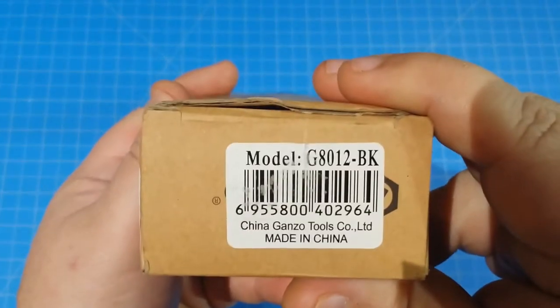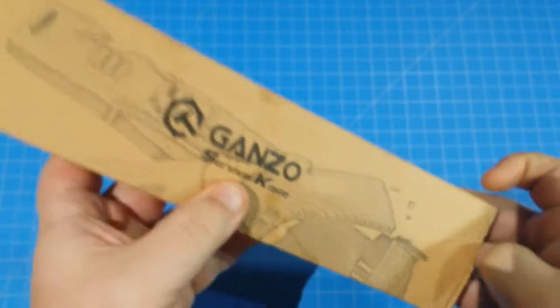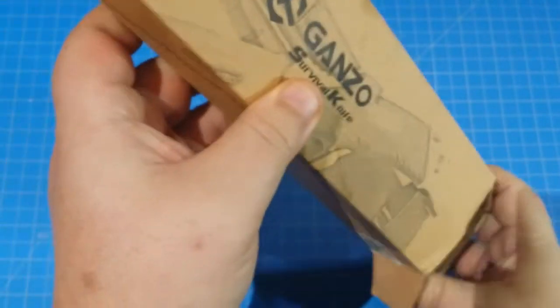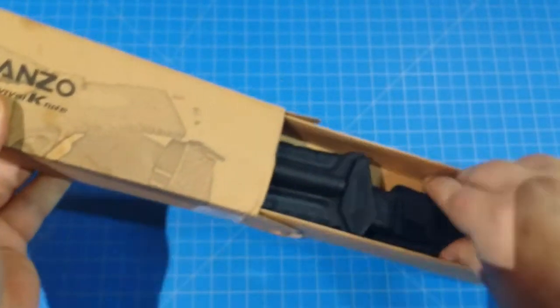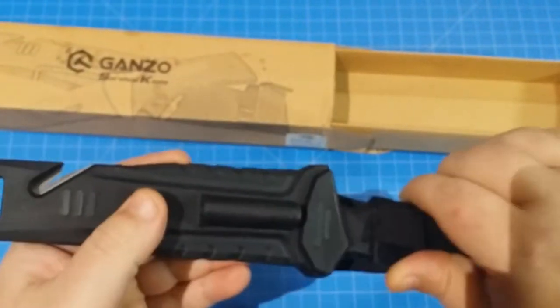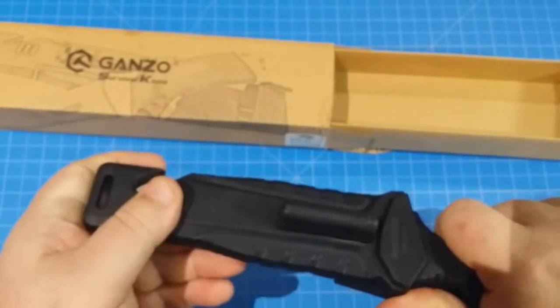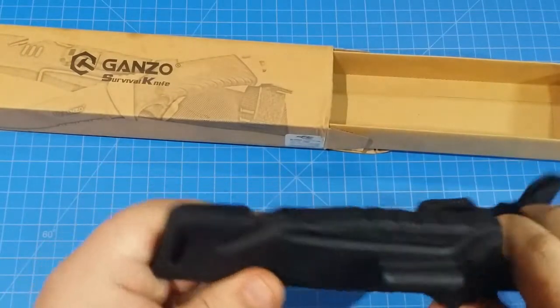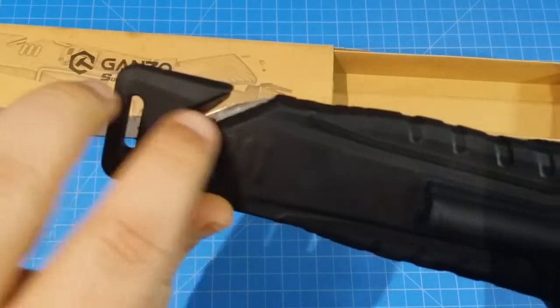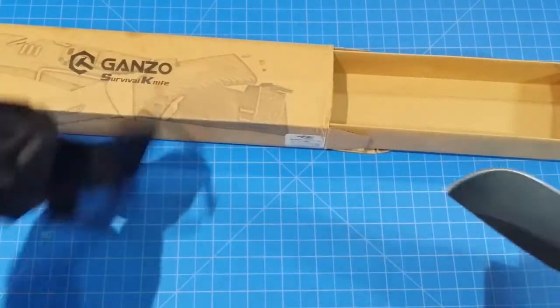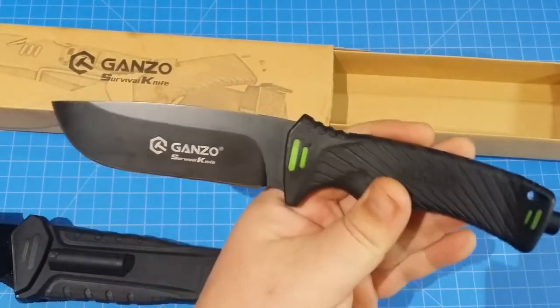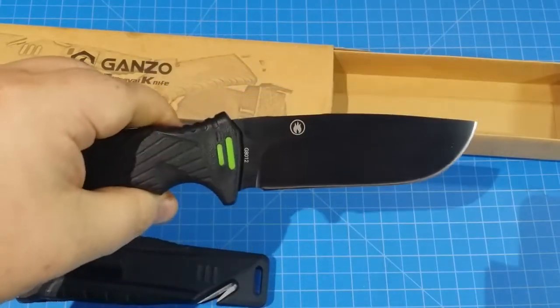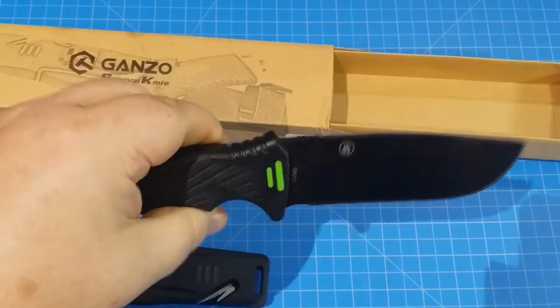This is the G8012 black and it is their fixed blade. I know it's pretty cool. Let's check this out real quick. Comes in a handy dandy sheath and it's got a little cord cutter there. We'll try that out a bit. Look at that. Pretty cool.